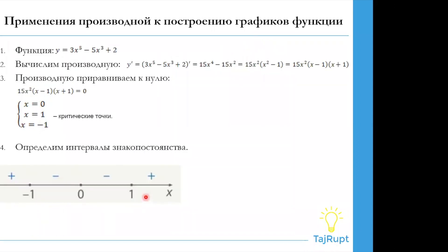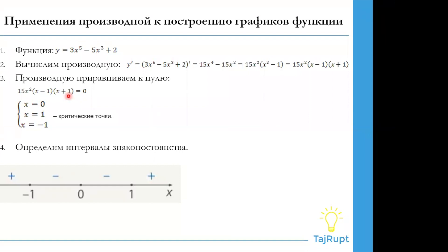Здесь уже более сложная функция: y равно 3x в пятой степени минус 5x в кубе плюс 2. Первый этап — это вычисление производной. Вычисляем производную и получаем 15x квадрат, (x − 1) и (x + 1) — три множителя. Чтобы найти критические точки, мы приравниваем производную к нулю. Приравняв к нулю, мы находим три критические точки. Они будут являться либо максимумами, либо минимумами — пока что мы это не знаем. Теперь эти критические точки мы отметим на оси OX, то есть на интервале.